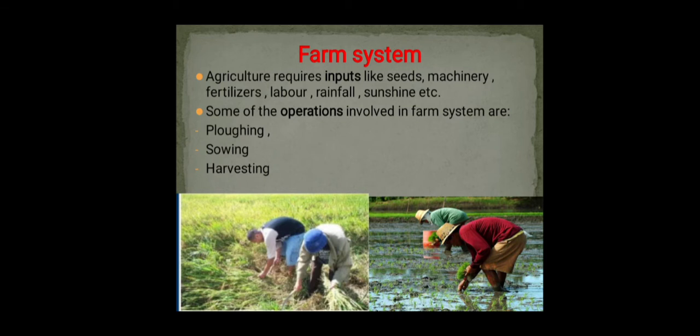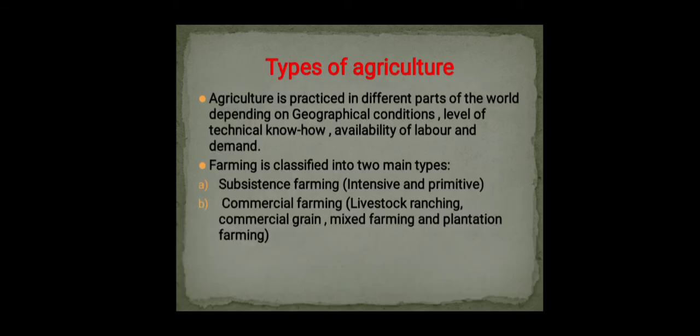The farm system requires inputs like seeds, machinery, fertilizers, labor, rainfall, and sunshine. A farmer needs the right inputs and adequate labor, along with rainfall and sunlight for crops. Operations involved in the farm system include plowing — digging the soil — then sowing the seed, and then harvesting after a few months.